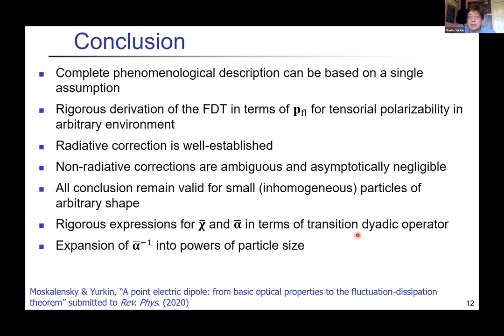For my conclusions: I argue we built a complete phenomenological description that can be based on a single assumption including rigorous derivation of the FDT in most general setting. We showed from all points of view that the radiative correction is completely unambiguous and well established. By contrast, non-radiative corrections are ambiguous and actually asymptotically negligible.